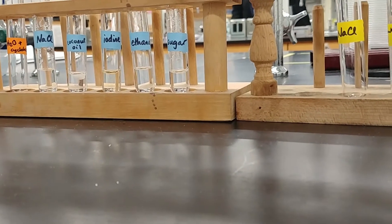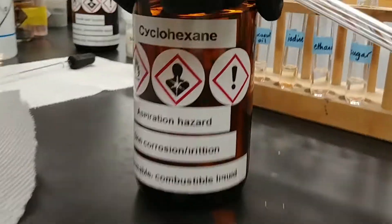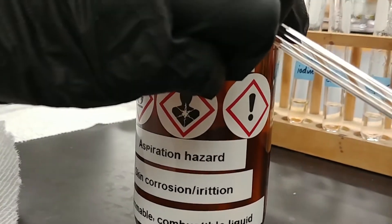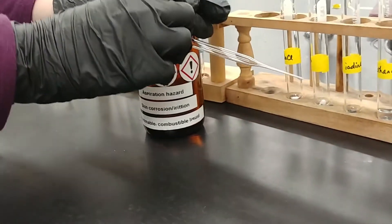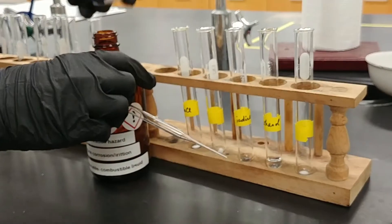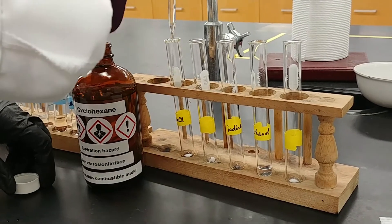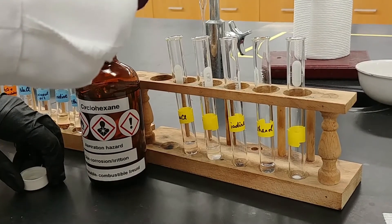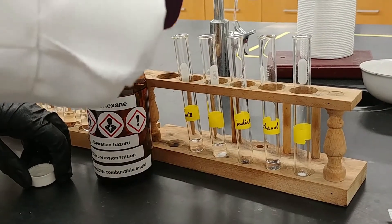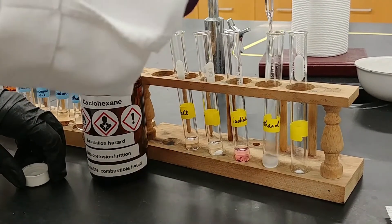So that is the water solvent. Now we're going to compare this with cyclohexane. Now cyclohexane is a very volatile solvent. That's why we have the parafilm around the cap. Generally, you want to work with this stuff with good ventilation. So I'm going to add again about one milliliter to each of these test tubes.